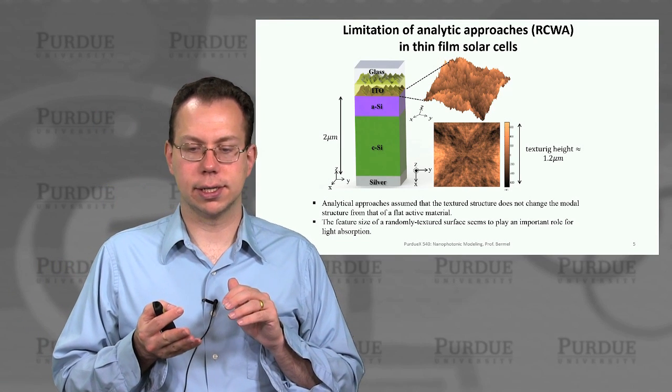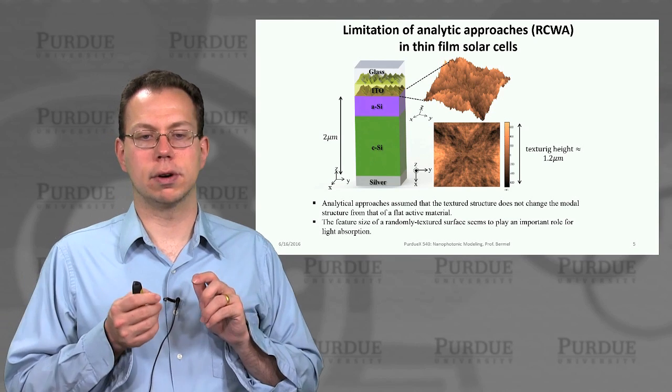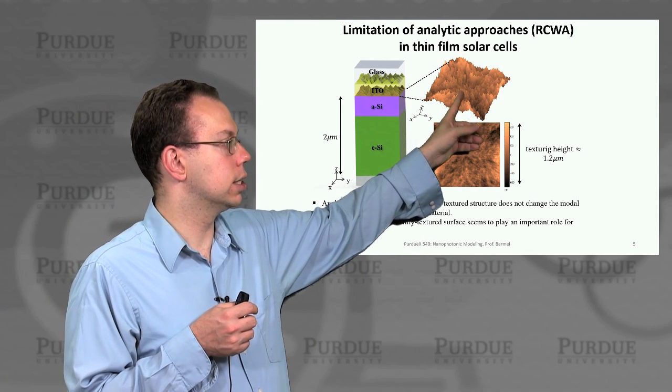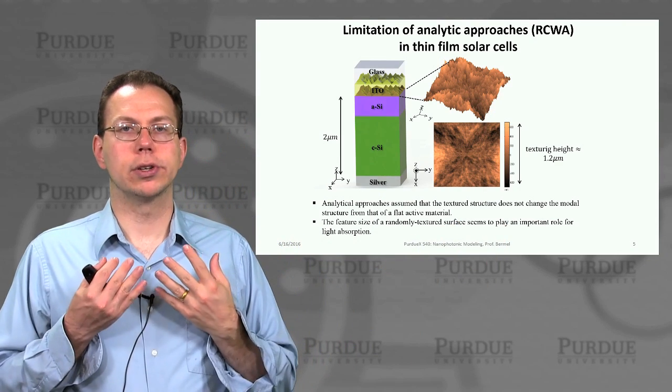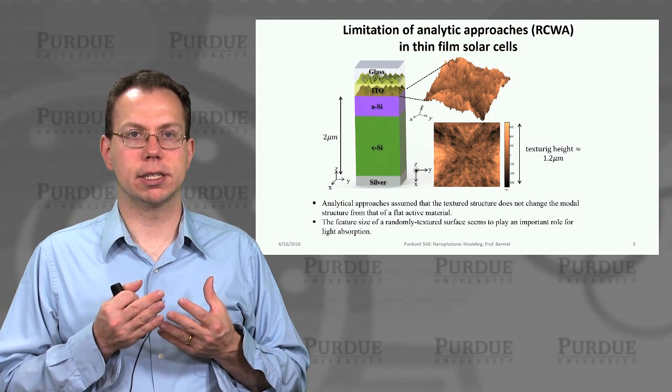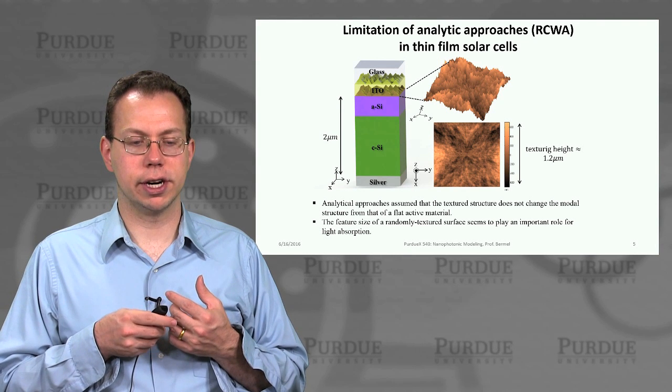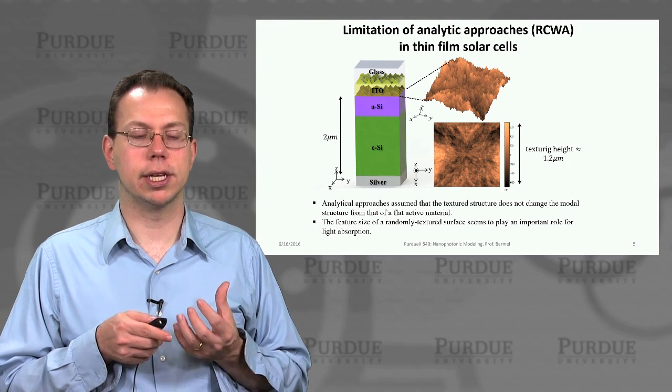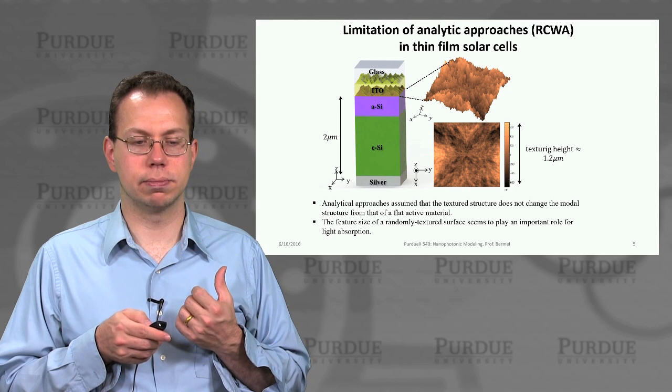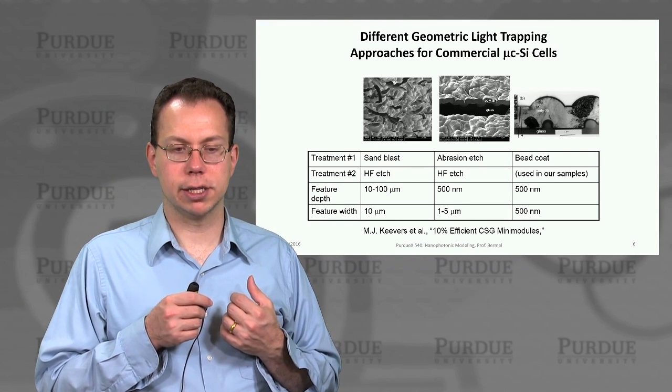If you're trying to simulate these sort of structures, in some of the methods that we talked about in unit two, like rigorous coupled wave analysis, then there are certain challenges. The texturing height in this structure is very significant, and also the texture features are very non-trivial. So in order to accurately capture these kind of features in a periodic matrix approach would require a tremendous amount of plane waves. And also the computational time to do the calculation would be enormous. So it's very challenging to actually implement that with these kind of realistic textures. Actually, arguably, finite difference time domain is the better way to go, from a computational perspective.